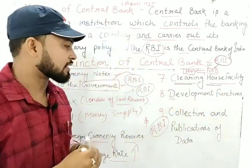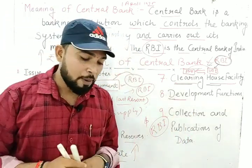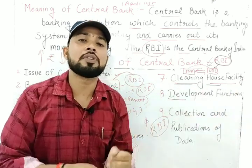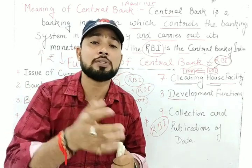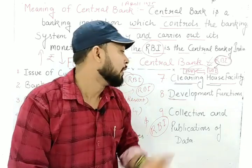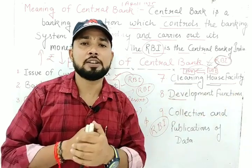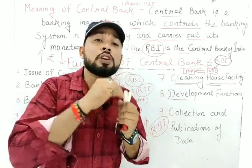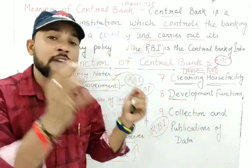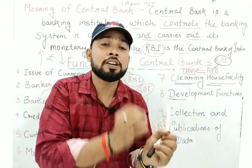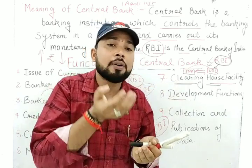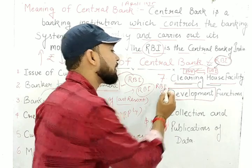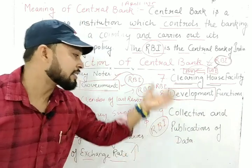The eighth function is the development function. All banking systems of India are controlled by RBI, and the main motive of RBI is social welfare — to develop the economy and society. Development functions include providing loans to agriculture sector, industrial sector, infrastructure, and student loans. When RBI provides loans for infrastructure, production increases, GDP grows, and the overall development of the country is promoted. So the development function of the economy is controlled by RBI.